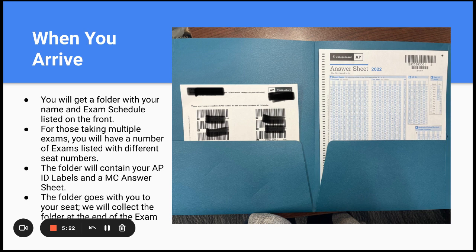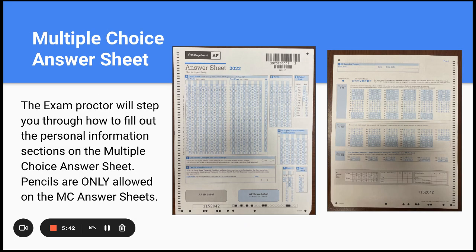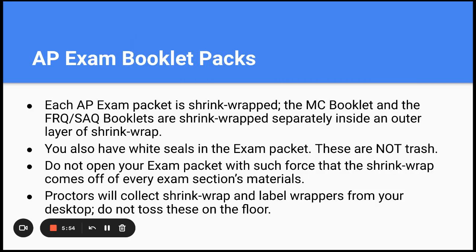When you arrive, you will receive a folder with your name and exam schedule listed on the front. For those taking multiple exams, you will have a number of exams listed with different seat numbers. The folder will contain your AP ID labels and a multiple choice answer sheet. The folder goes with you to your seat and will be collected at the end of the exam before dismissal. Your exam proctor will step you through the required elements on the multiple choice answer document. Remember, number two pencils are only allowed on the multiple choice answer documents. Each AP exam pack is shrink-wrapped — the multiple choice booklet and the free response booklets are shrink-wrapped separately inside an outer layer of shrink wrap. You also have white seals in the exam pack — these are not trash. Do not open your exam packet with such force that the shrink wrap comes off. Proctors will collect shrink wrap and label wrappers from your desktop; do not toss these on the floor.